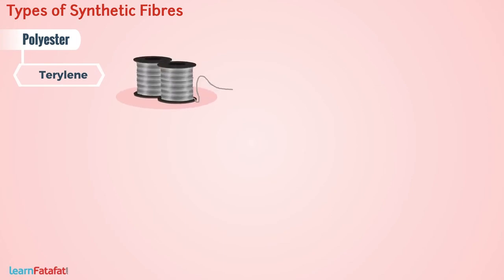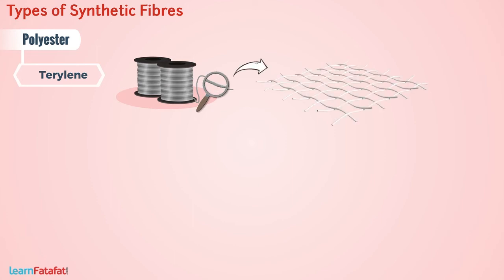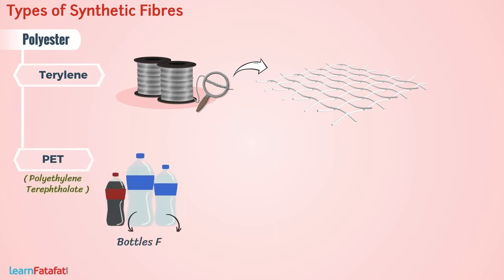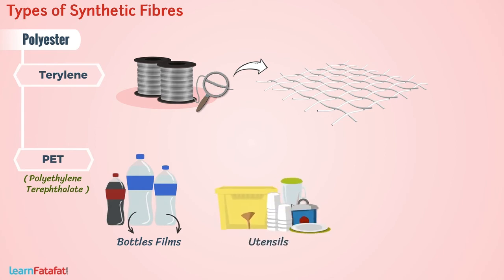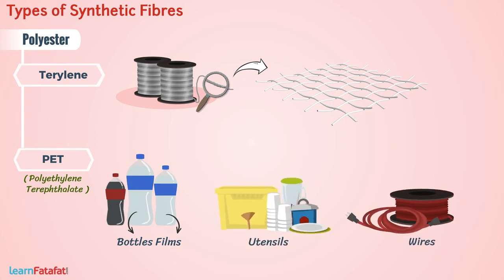Terrylene fibers are very fine and these can be woven like any other yarn, i.e., thread. PET is a form of polyester that is used to make bottles, films, utensils, wires and other useful products.